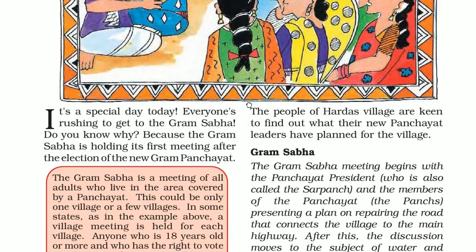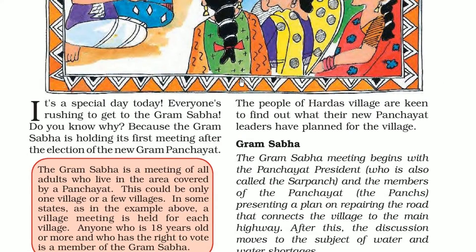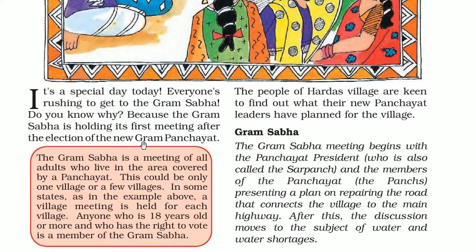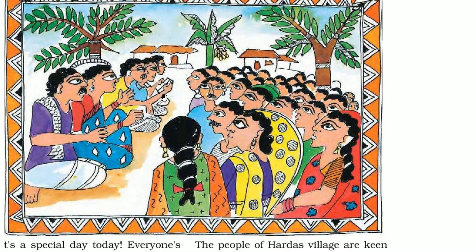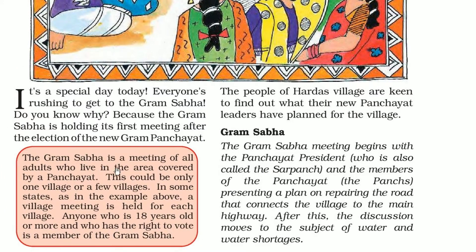It's a special day today — everyone is rushing to get to the Gram Sabha, because it is holding its first meeting after the election of the new Gram Panchayat. 'Panch' means 5, so this is Panchayat — 5 people are sitting. The Gram Sabha is a meeting of all adults who live in the area covered by the Panchayat, which could be one village or a few villages.